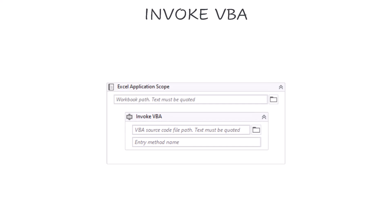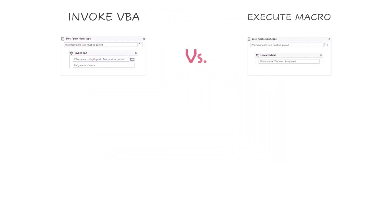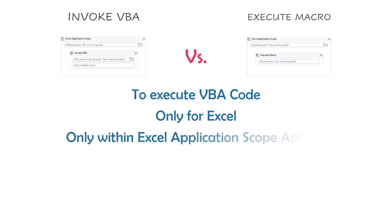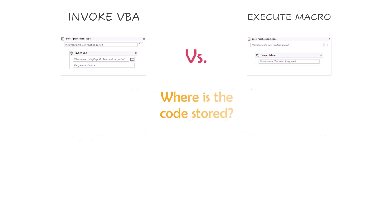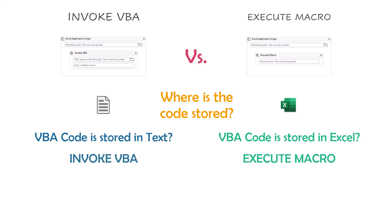Before we move forward, let's first understand the difference between Invoke VBA and Execute Macro. Both activities are to execute a VBA code, and both can only be used for Excel and only within Excel Application Scope Activity. The only difference between the two activities is where the code is stored. If the VBA code is written in an Excel file directly, we use Execute Macro. But if the code is written in a text file, we use Invoke VBA Activity.